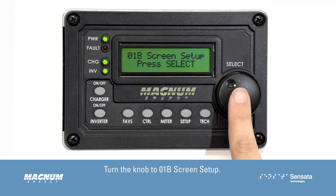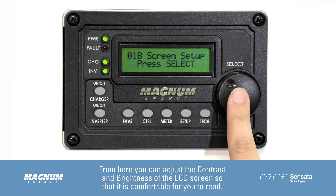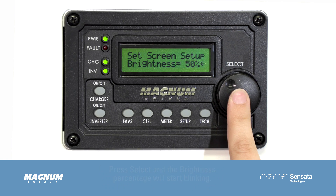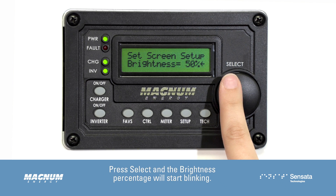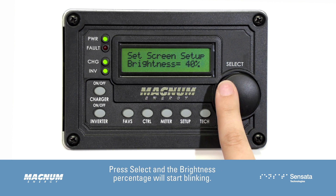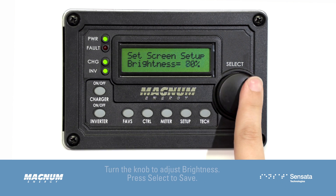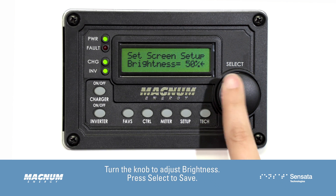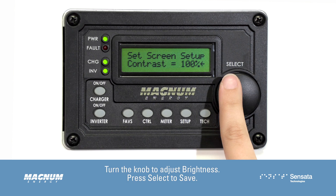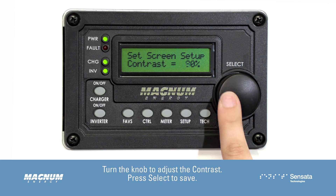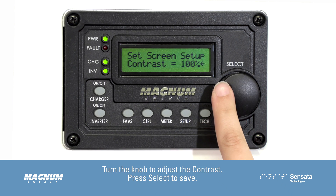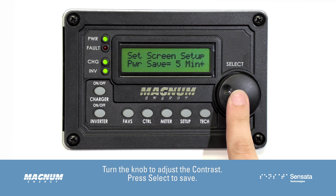Turn the knob to 01B Screen Setup. From here you can adjust the contrast and brightness of the LCD screen so that it is comfortable for you to read. Press Select and the brightness percentage will start blinking. Turn the knob to adjust brightness and press Select to save. Then turn the knob to adjust the contrast and press Select to save.